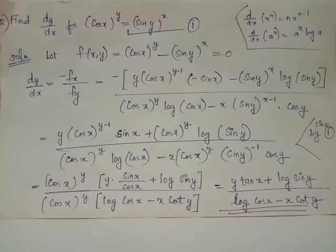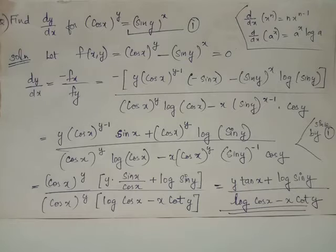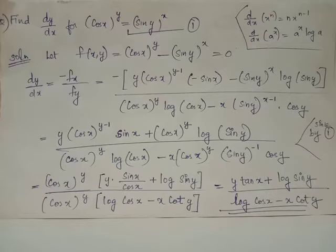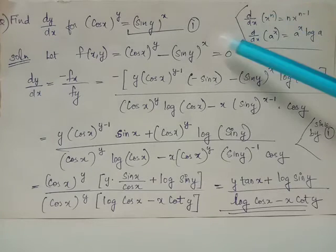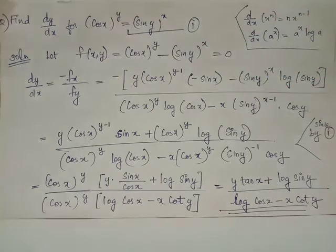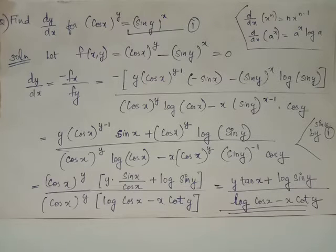When we differentiate the second term sin y whole raised to x partially with respect to y, we use the power rule. Here x is a constant and equals n, and in place of the base we have the function sin y because y is the variable. Thus the partial derivative of sin y whole raised to x is x times sin y whole raised to x minus 1, into cos y.